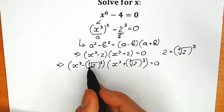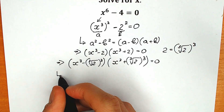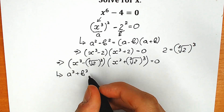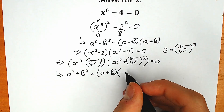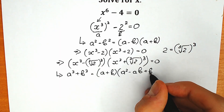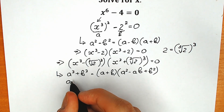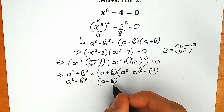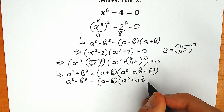This is our difference of two cubes, and this is the sum of two cubes. Let's remember the school formulas. a cubed plus b cubed equals a plus b times a squared minus ab plus b squared. And a cubed minus b cubed equals a minus b times a squared plus ab plus b squared.